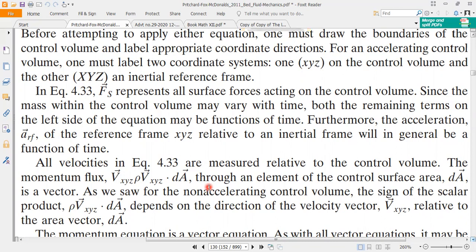All velocities in equation 4.33 are measured relative to the control volume. The momentum term will be V XYZ rho V XYZ dA. These are the momentum terms through an element of the control surface area dA.